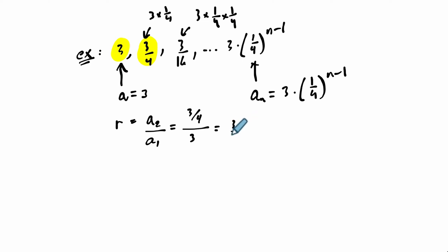So here I have 3 fourths and I want to divide that by 3. That's the same thing as 3 fourths times 1 over 3, which is 1 over 4. And that's our common ratio. So if you're given a sequence, you can just divide two steps that are consecutive, one after the other, and then you'll be able to find that common ratio.